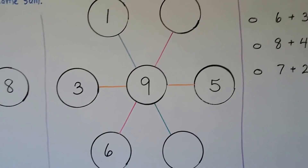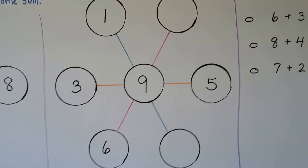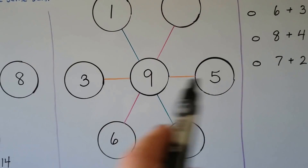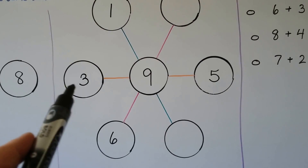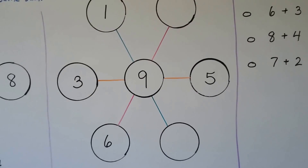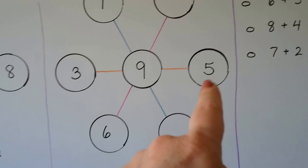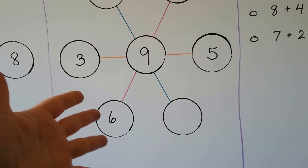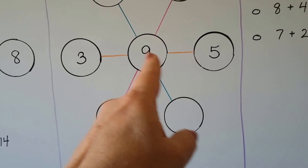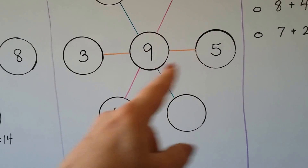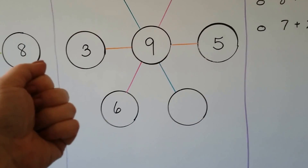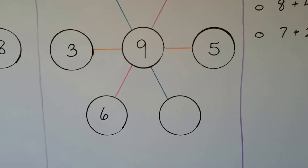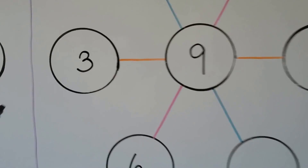We start with the line that has all the numbers — that would be the orange one. We find the sum, starting with the largest addend 9, then count on 5 to get 14, then add 3 more: 15, 16, 17. So the lines are supposed to equal 17.